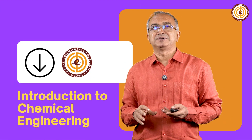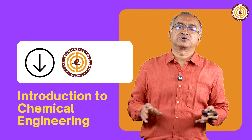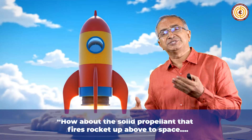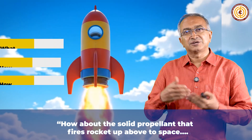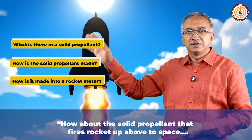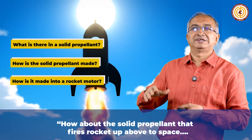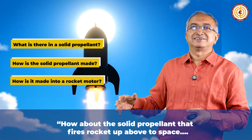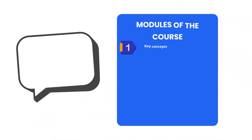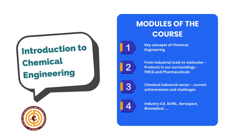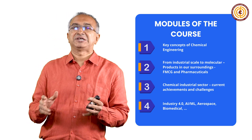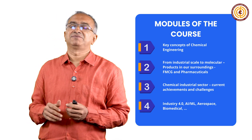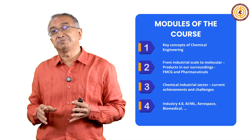Through all these examples we will introduce chemical engineering. To close with another example: rocket propellant, which is used to send satellites. The question again is: what chemicals are there? What are the molecules that make up this solid propellant? How is it made and how is it packaged — in this case, into a rocket motor? We will cover this through four modules: initially discussing key concepts, then moving to examples in our surroundings, then looking at achievements and challenges that chemical engineers face, and ending with some of the advancements in the field.